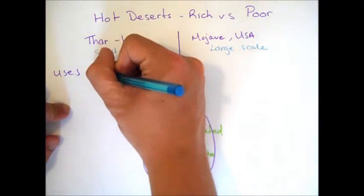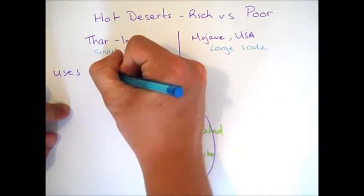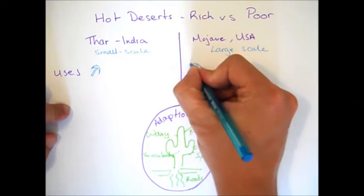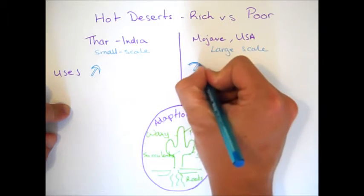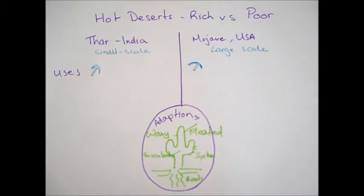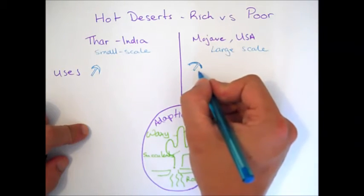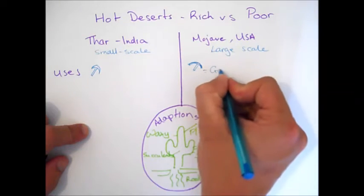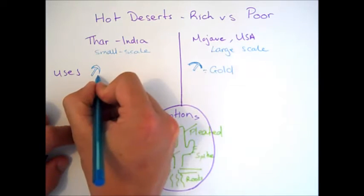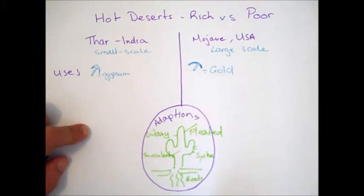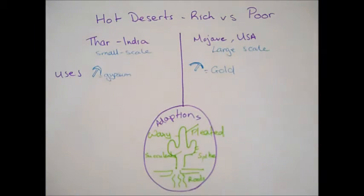So if we were to take, for example, mining. Mining does actually occur in both our rich Mojave Desert and in our poor Thar Desert. But for very different materials. In the Mojave Desert, they're mining on a large scale for expensive materials such as gold. Whereas in the Thar, it's for much cheaper materials such as gypsum, which is used in the creation of cement and other cheaper products. So, that's one big difference.